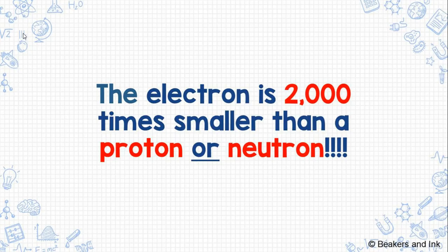Now we know that the atom is very, very small, but the electron is actually 2000 times smaller than a proton or a neutron. So of the three subatomic particles, an electron is going to be our smallest.